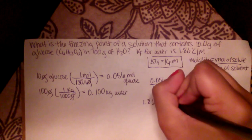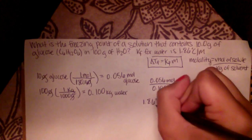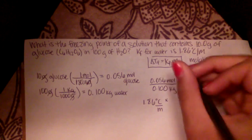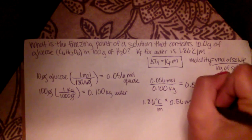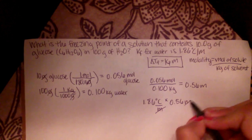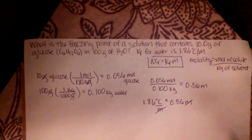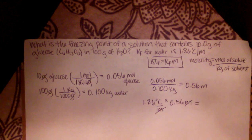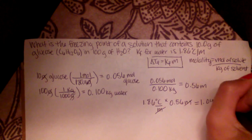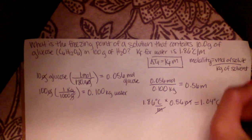And I find it always important to line up our units so you can cancel them out. So molality will cancel and you're left with degrees Celsius. And when you multiply that, you then get 1.04 degrees Celsius.